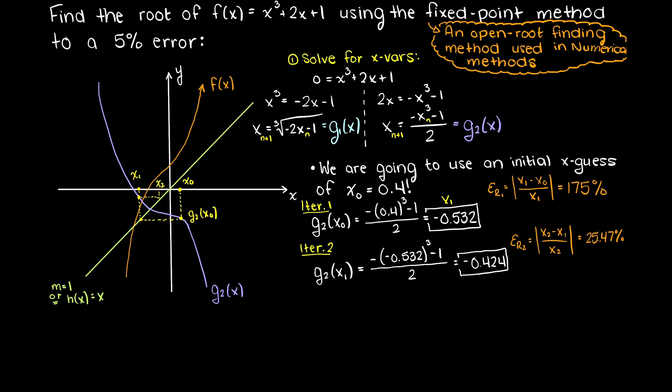Now we are still above our required 5% error, therefore we need to complete at least one more iteration. Again we just plug our x2 value into our g2 function and we see that x3 is equal to minus 0.4617. When solving for the percent error, we can see that we get 8.165%, which is still higher than our 5% threshold.